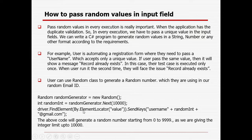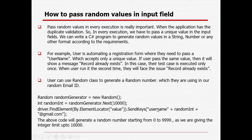For example, suppose I want to add a random email ID every time on the Facebook login page. The prefix like 'ram' and the domain like '@gmail.com' or '@hotmail.com' can be common. I just need to change the number in between — like 111, then 5, then 11, and so on. That's what we can generate.